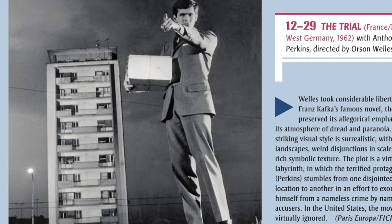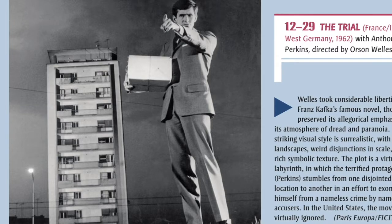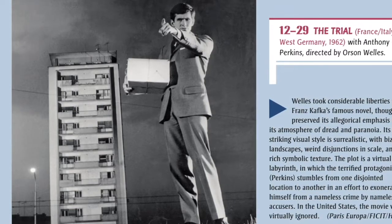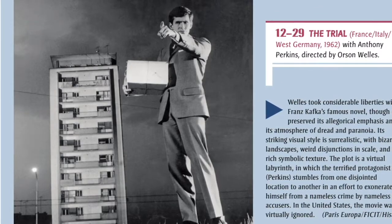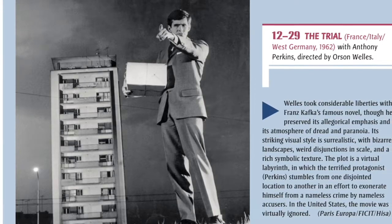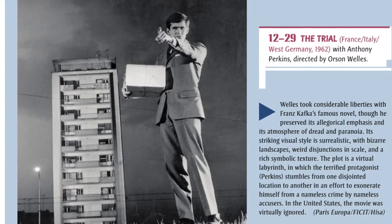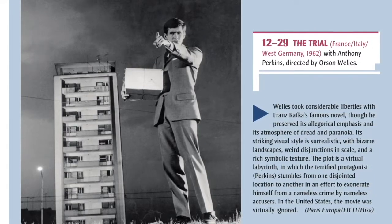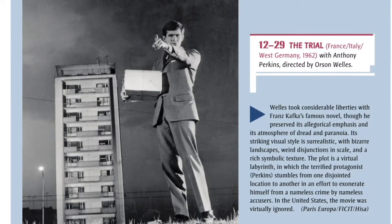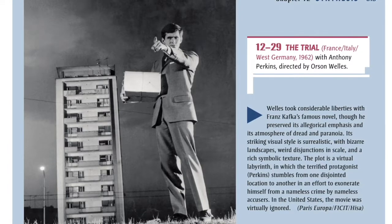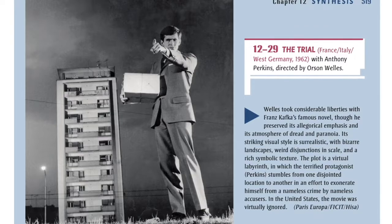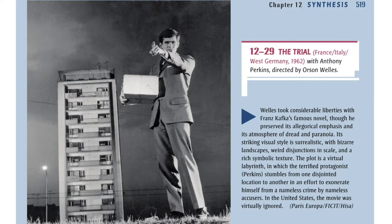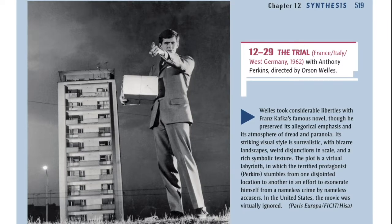12-29: The Trial, France-Italy-West Germany, 1962, with Anthony Perkins, directed by Orson Welles. Welles took considerable liberties with Franz Kafka's famous novel, though he preserved its allegorical emphasis and its atmosphere of dread and paranoia. Its striking visual style is surrealistic, with bizarre landscapes, weird disjunctions in scale, and a rich symbolic texture. The plot is a virtual labyrinth, in which the terrified protagonist (Perkins) stumbles from one disjointed location to another in an effort to exonerate himself from a nameless crime by nameless accusers. In the United States, the movie was virtually ignored.